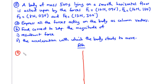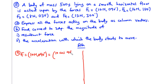For part a, we express all forces as column vectors by resolving into x and y components. For F1, which is 10 newtons at 90 degrees, the column vector is 10 cos 90 degrees and 10 sin 90 degrees. So F1 equals 0 in the horizontal component and 10 in the vertical component.